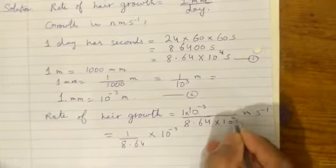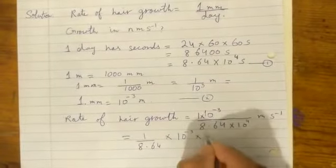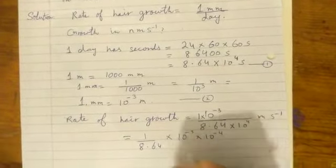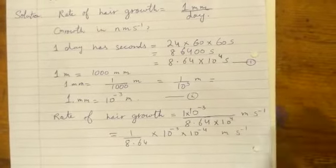When we bring it to the numerator, it becomes ten to the power minus four. Then if we calculate this, we get one over 8.64 times ten to the power minus three times ten to the power minus four, which is meters per second.